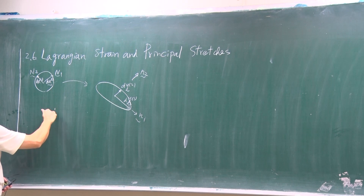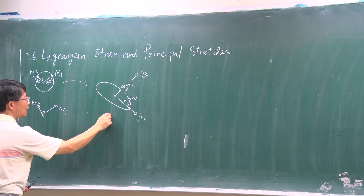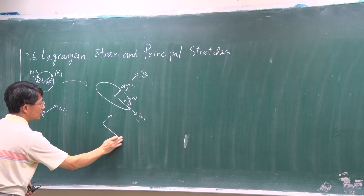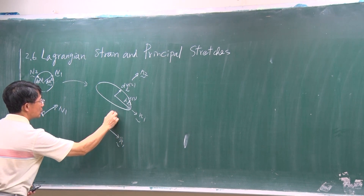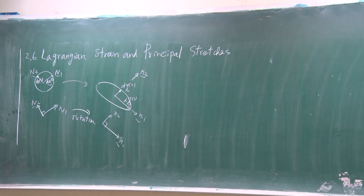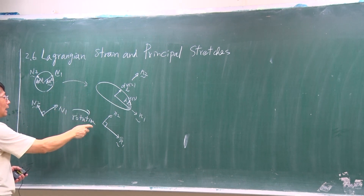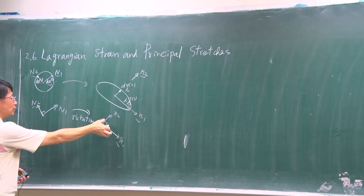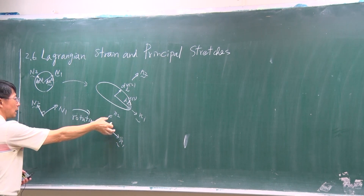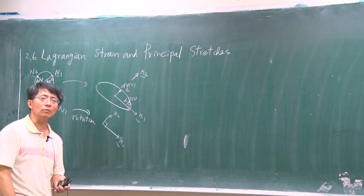We have rotation from N1 and N2 — we rotate the material line. Of course, we have also deformation too. We have rotation and deformation. The rotation is carried by the angle difference between these two sets of eigenvectors.